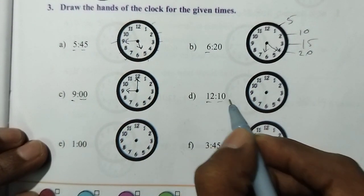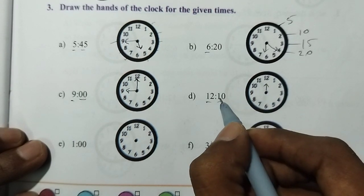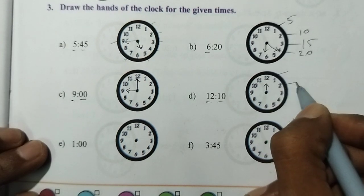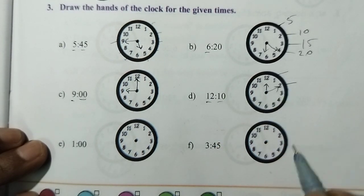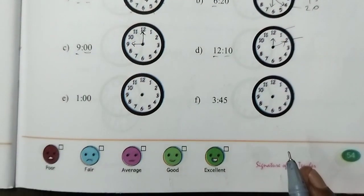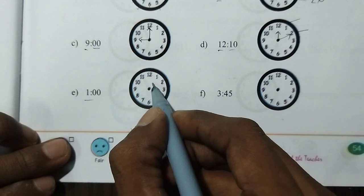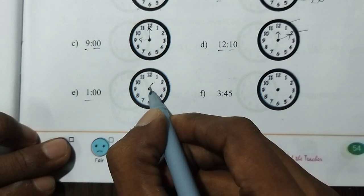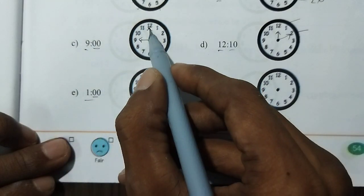Next, 12:10. The small hand is at 12. For 10 minutes, that's at 2 on the clock. So the big hand is at 2. Next, for 1:00, the small hand is at 1.